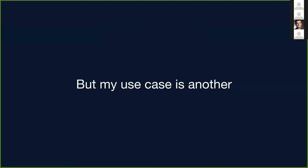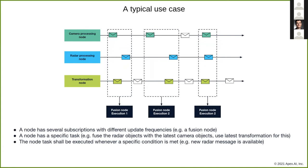But my use case is another one. Typical use cases: I have a node with several subscriptions, and these subscriptions have different update frequencies, like the fusion node we see in this image here. It has a camera topic, a radar topic, and a transformation topic, with all subscriptions for these topics. This node needs to execute a specific task: to use the radar objects with the latest camera objects and the latest transformation. So the node task shall be executed whenever a specific condition is met, and in this simple case, it's whenever there's a new radar message, because the radar is the leading sensor here and shall trigger the fusion.